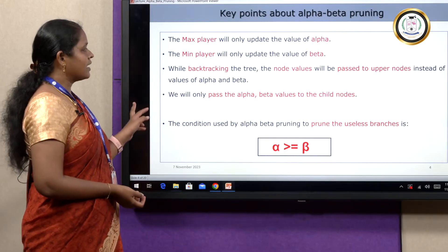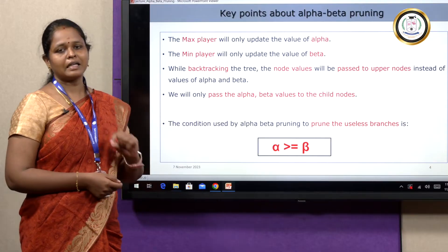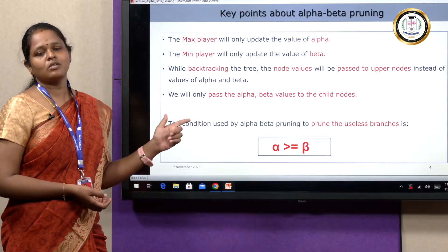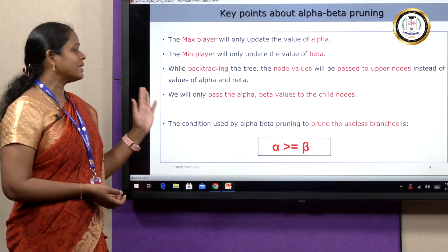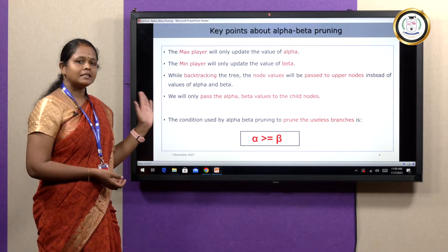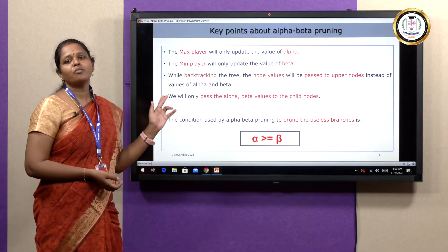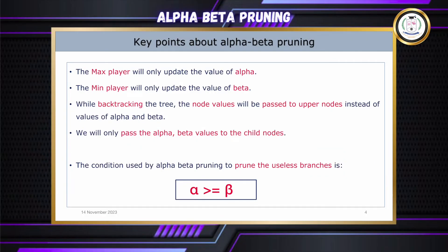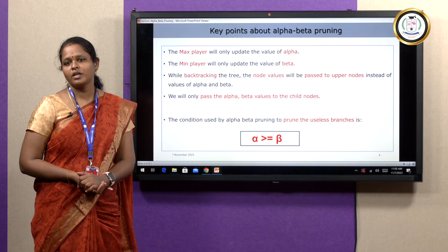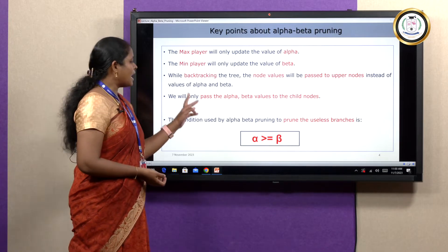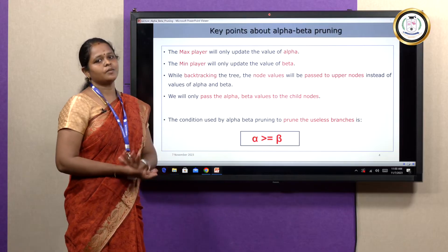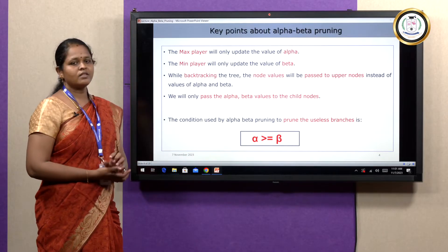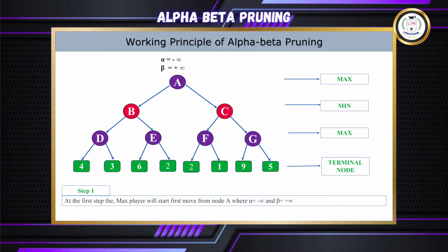In the depth-first exploration with backtracking, when we backtrack a node, only the node value is passed to the parent node — we are not passing the alpha-beta value. The alpha-beta values are passed only to the child nodes. One more important condition: we prune the useless branch when alpha is greater than or equal to beta. When we face this situation, we prune those branches.